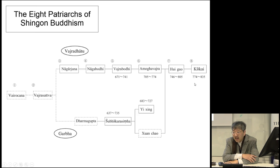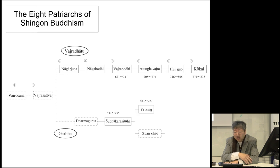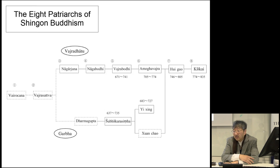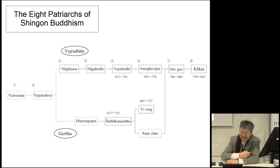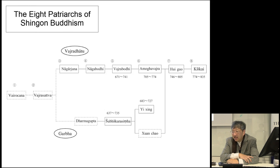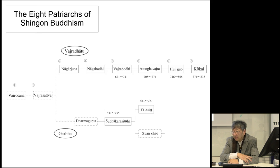Unfortunately, in China there were several suppressions of Buddhism by Chinese emperors, so Chinese Esoteric Buddhism disappeared and only Japan preserved the tradition of Esoteric Buddhism. Nowadays, quite many Chinese priests have dispatched students to Japan and brought back Chinese Esoteric Buddhism. Now in Xi'an and other places they have constructed Chinese Esoteric Buddhist monasteries, and the tradition of Esoteric Buddhism has been revived in China.